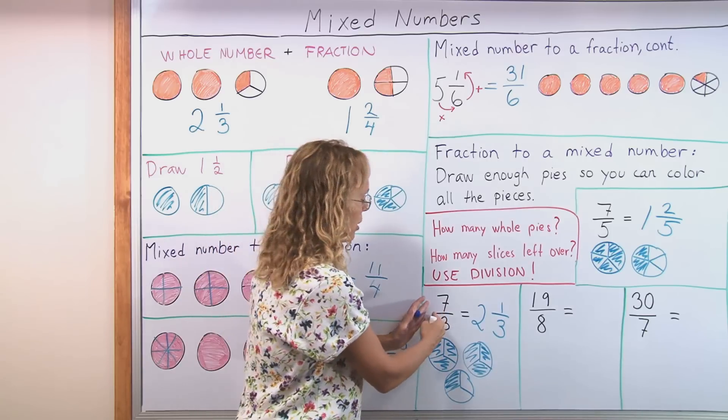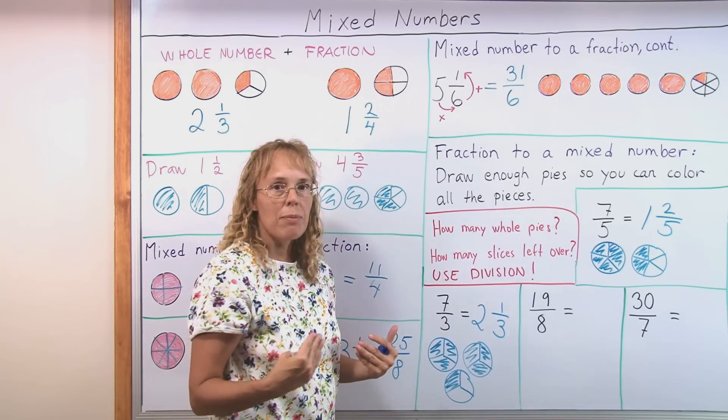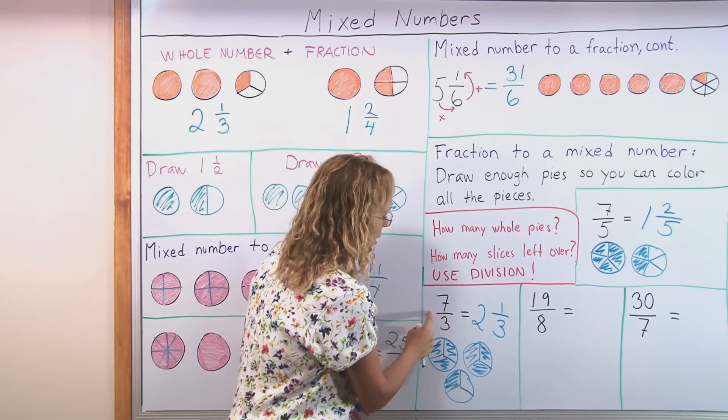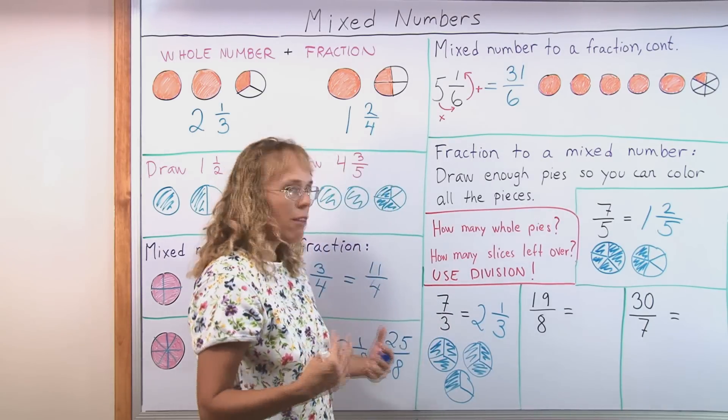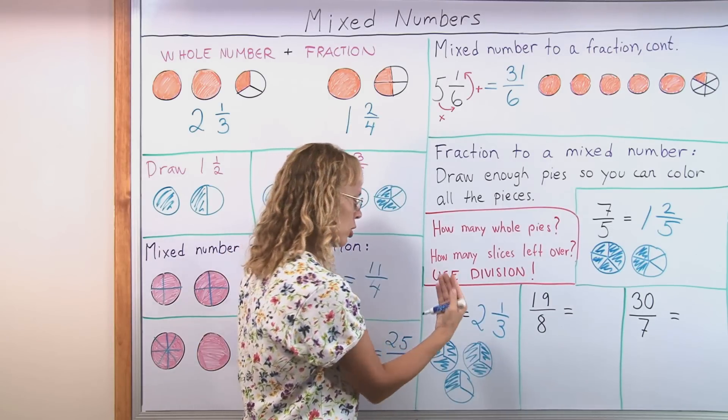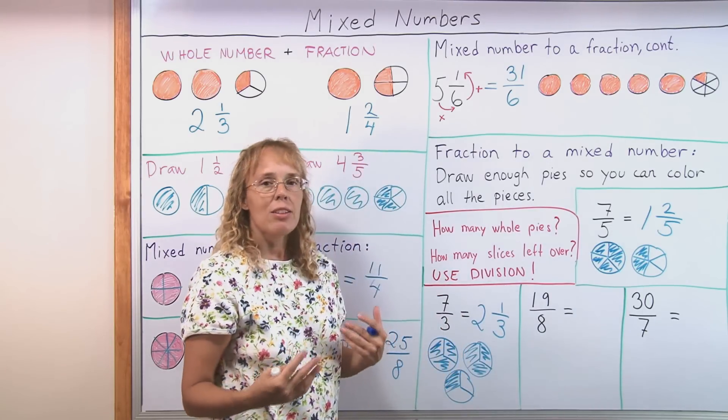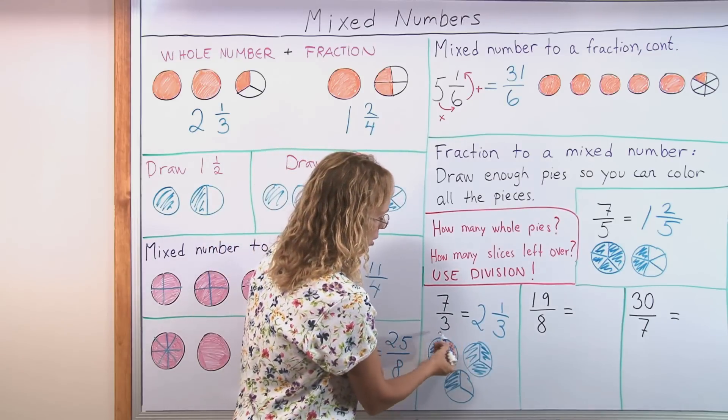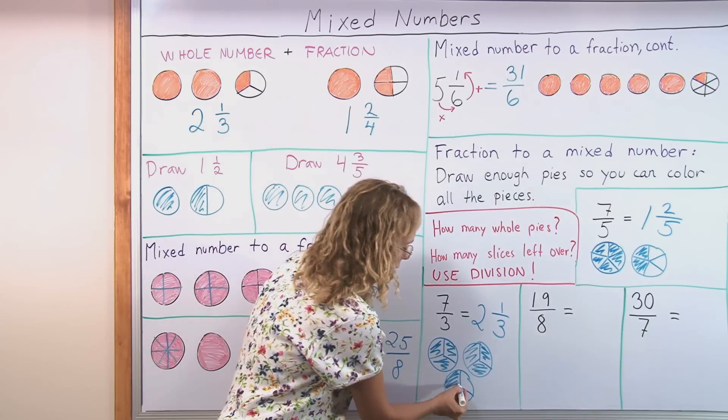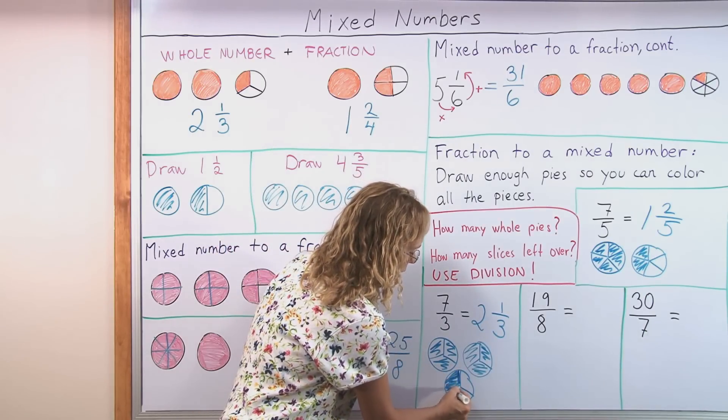This is basically a division problem. You have to think of your fraction as a division problem. Seven divided by three. And then when you solve that you will get the answer. Seven divided by three equals two and remainder one. The two tells you that there's going to be two whole pies. And the remainder slice is the one third. This slice here is the one remainder.